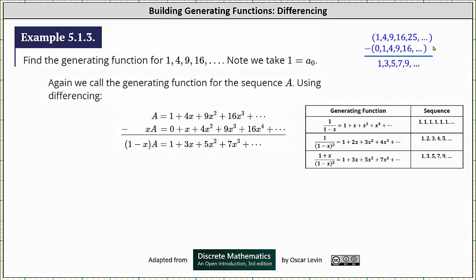Now let's look at the notes in the upper right-hand corner. If we take the given sequence and subtract the sequence 0, 1, 4, 9, 16, ... term by term, we have: 1 minus 0 is 1, 4 minus 1 is 3, 9 minus 4 is 5, 16 minus 9 is 7, and so on. Notice this sequence is the exact sequence we know the generating function for from the previous lesson.